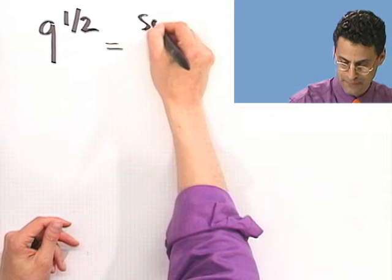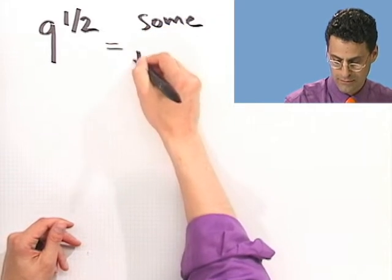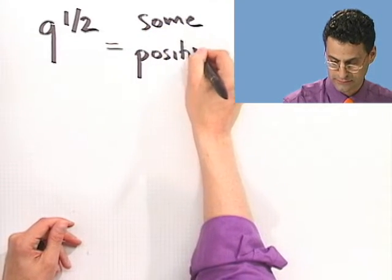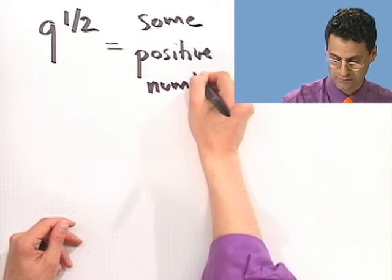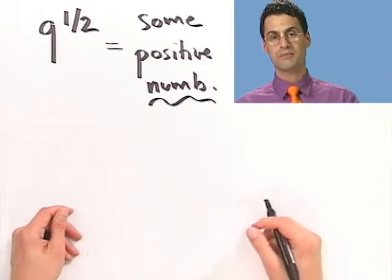Well, it's going to be some positive number. I just don't know what that positive number is. So it's some positive number. I'll write numb in case you're getting numb. A little joke there. But we don't know what it is.